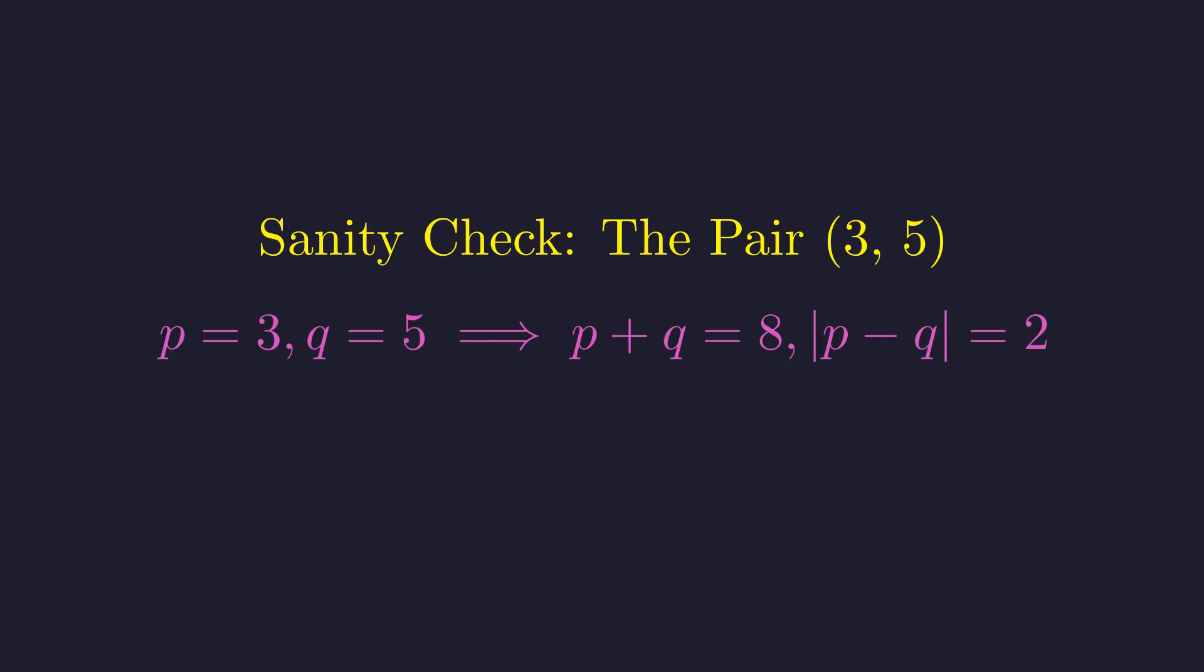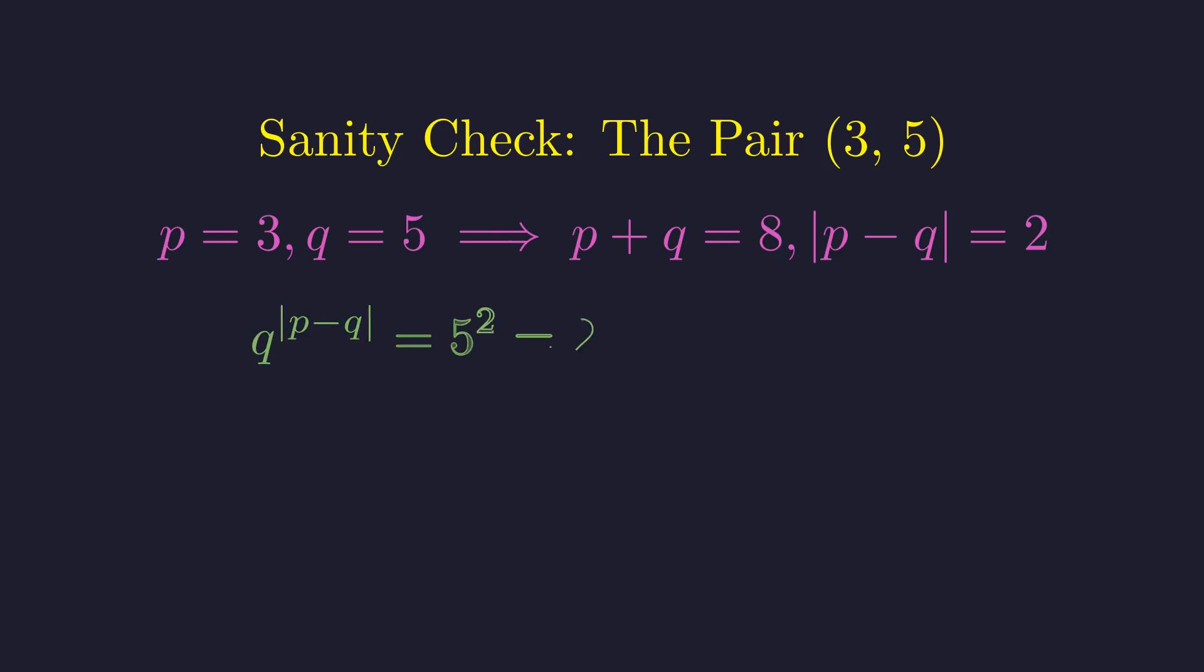These conditions look abstract. Let's perform a sanity check with the first pair of distinct odd primes, 3 and 5, to see if they work. Here, p is 3, q is 5, their sum is 8, and the absolute value of their difference is 2. Let's check the first condition. Is 5 squared congruent to 1 modulo 8? 25 is 3 times 8 plus 1. So, yes, it holds.